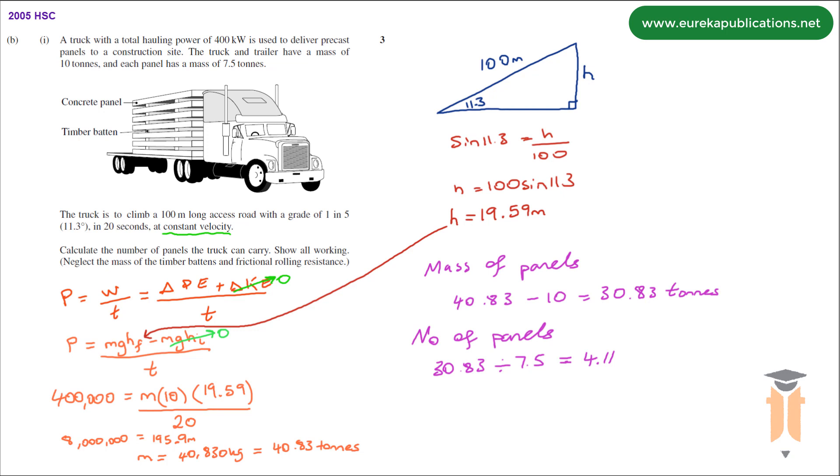We can't have 4.11 panels so the truck can carry a maximum of 4 panels. And that's your answer.